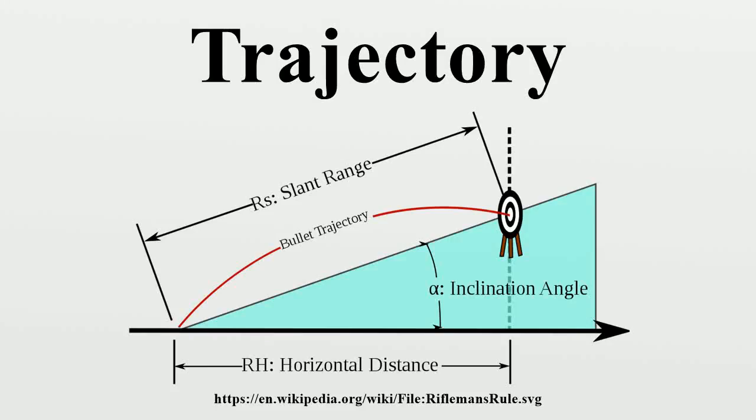A trajectory or flight path is the path that a moving object follows through space as a function of time. The object might be a projectile or a satellite.